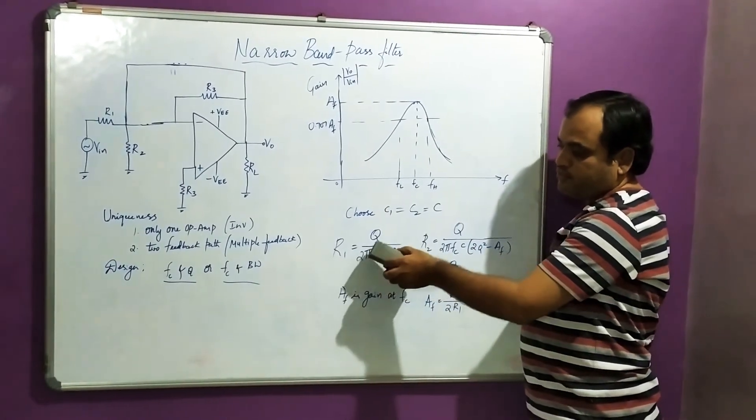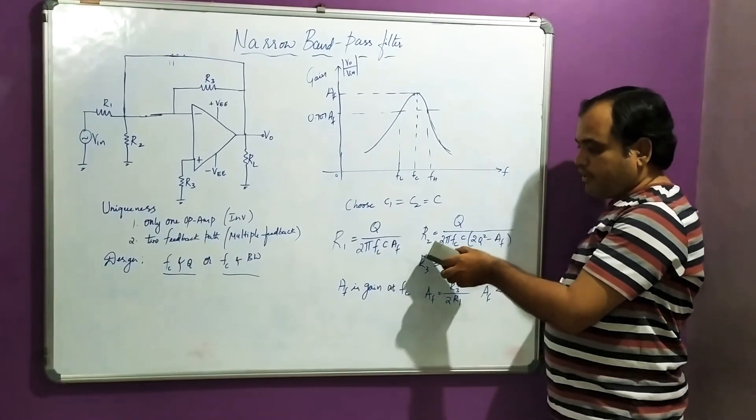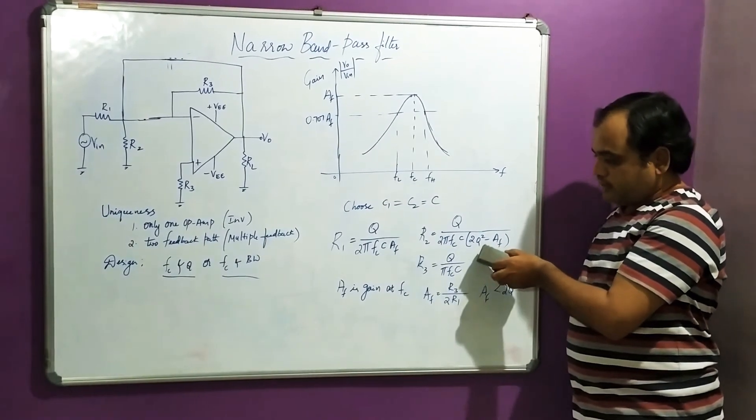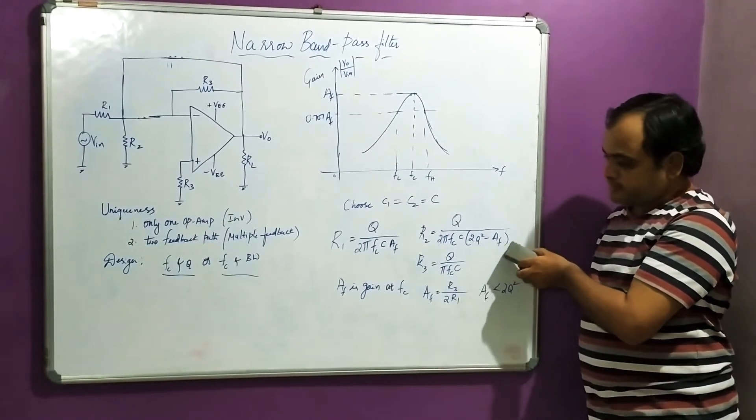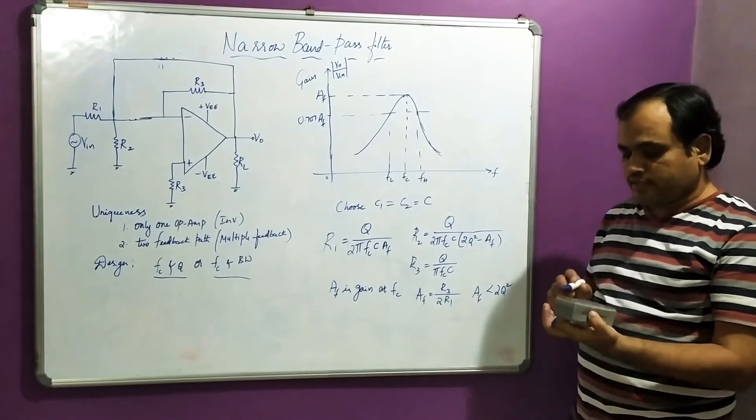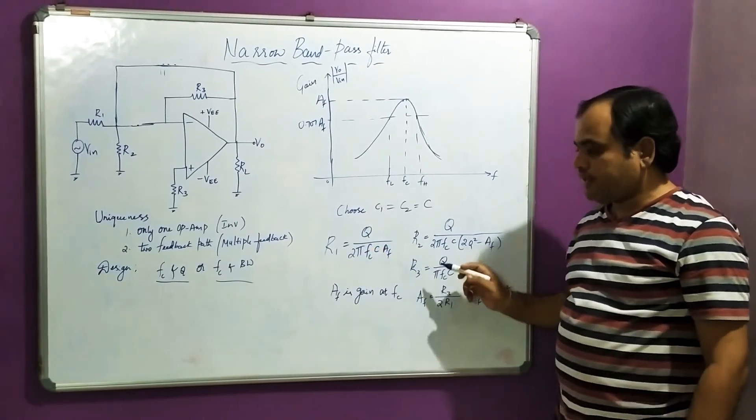I am going to design R1 equals Q divided by 2πFl C into AF. R2 equals Q divided by 2πFc C into (2Q² - AF). R3 equals Q divided by πFc C. These are the standard design values for parameters R1, R2 and R3.